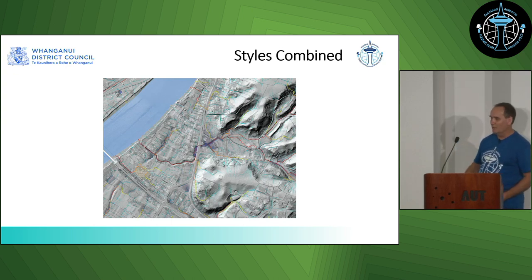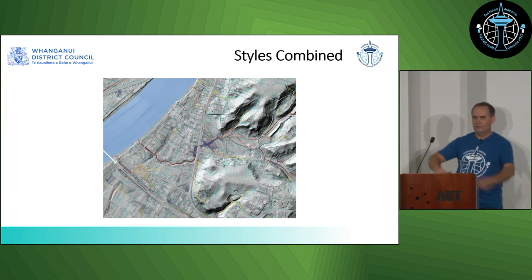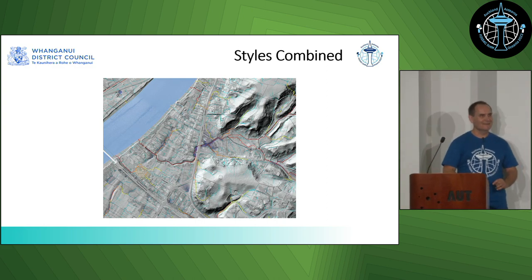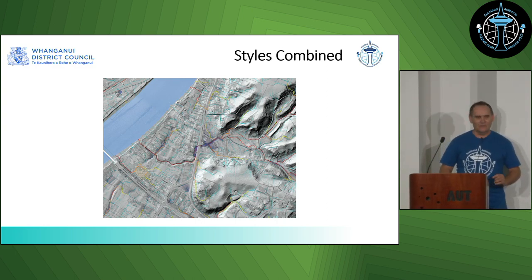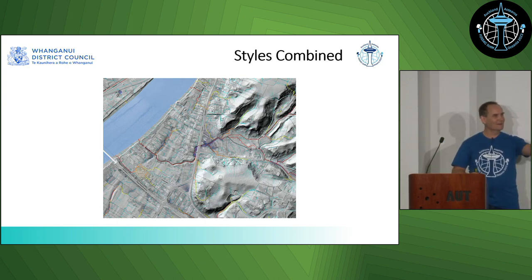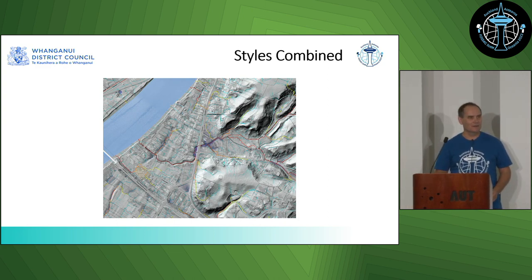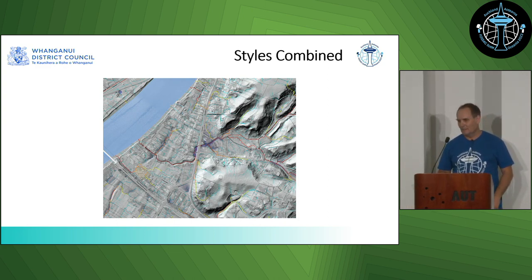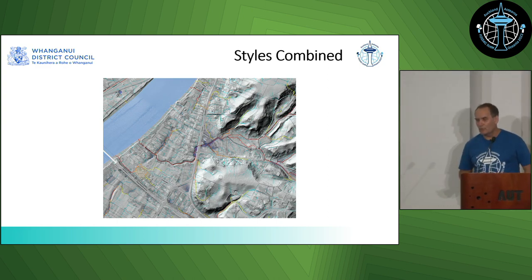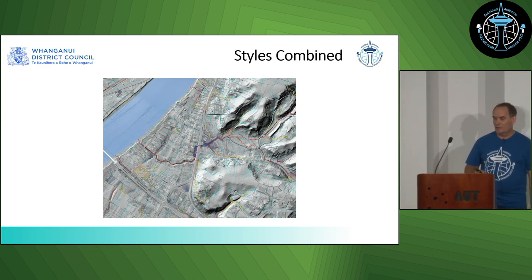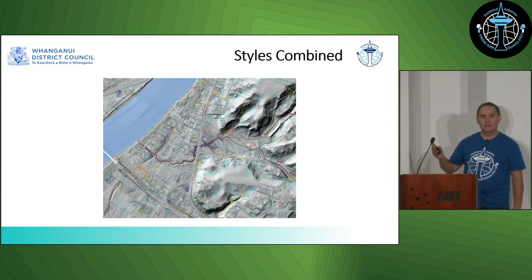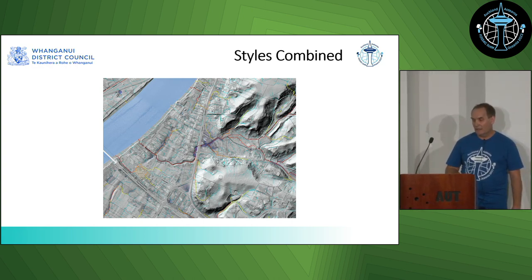Of course, we combine those styles together and overlay them over a DEM. If you'd been to the cartography sessions, you'd be learning how to present your data in a meaningful way. The bright red lines are the overland flow paths with a contributing area greater than five hectares, a middle range of orange, and then yellow for less than a hectare.